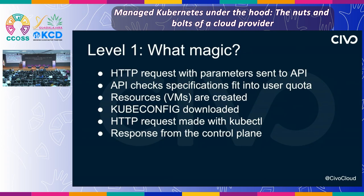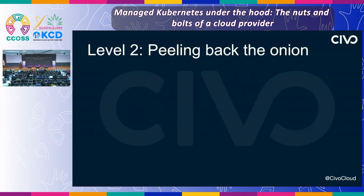Even if I was a magician bound by the rule of never revealing how the trick has been done, it wouldn't be a spoiler — because even though I might say "abracadabra Kubernetes," there is no magic. Some of the things that are happening are that the cloud provider has an API that accepts an authenticated HTTP request, there's a database table that checks if the requested resources are available and fit into the user's tier, the virtual machines get created, the kubeconfig gets sent back to the user, and the user makes another authenticated HTTP request using kubectl and the Kubernetes API. But like an onion, there are layers and we can keep peeling.